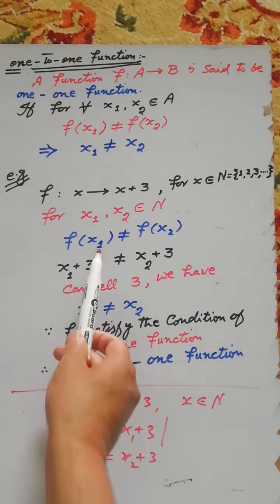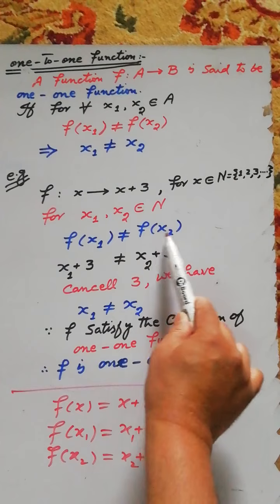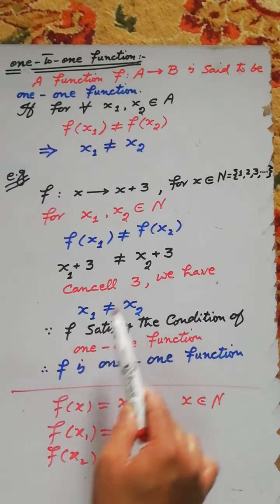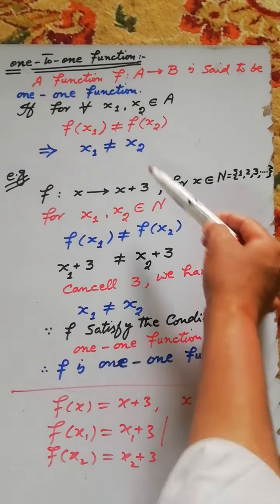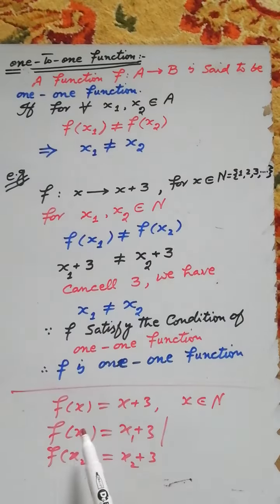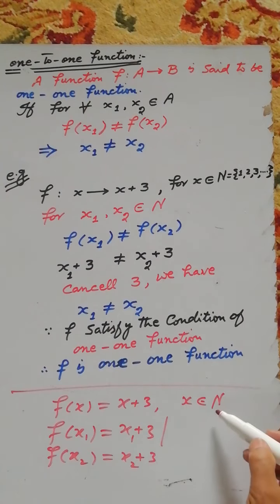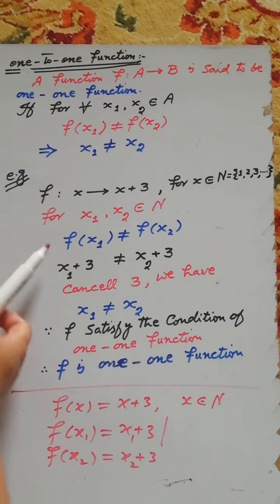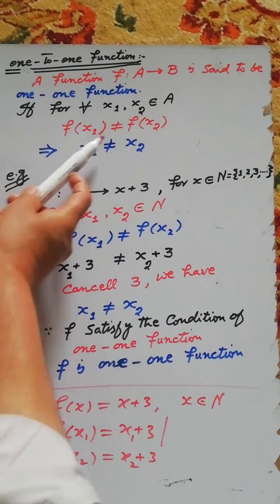Then according to the condition, f(x1) = x1 + 3 is not equal to f(x2) = x2 + 3. Cancelling the 3 from both sides, we have x1 is not equal to x2. So the given function f(x) = x + 3, for x belonging to the domain set where the domain is the set of natural numbers, satisfies the condition of a one-to-one function, that is f(x1) not equal to f(x2) implies x1 is not equal to x2.